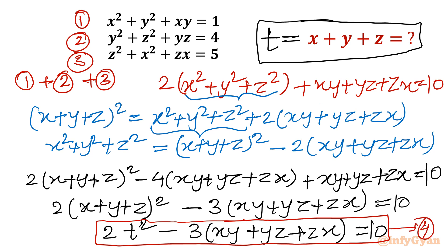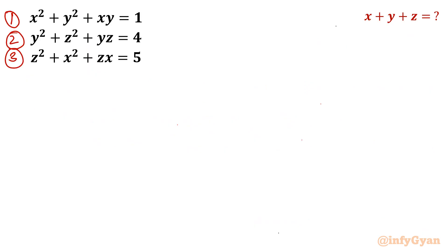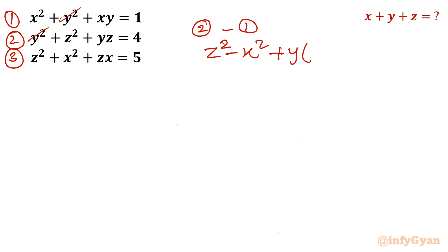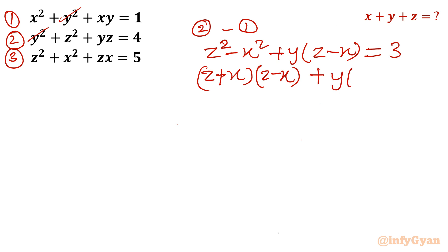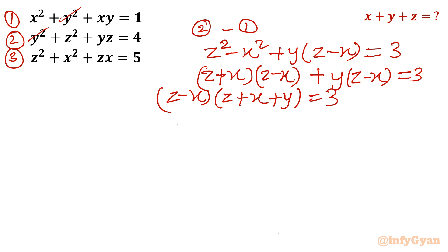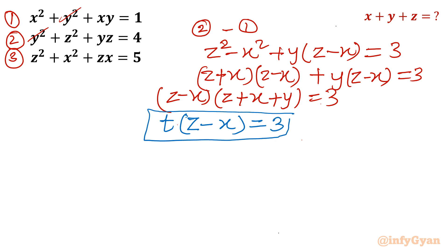Now I will consider equations 1, 2, and 3 again and perform operation 2 minus 1. The y squared terms cancel out. So we get z squared minus x squared plus y(z minus x) equals 3. Applying the a squared minus b squared formula: (z plus x)(z minus x) plus y(z minus x) equals 3. Taking (z minus x) as common: (z minus x)(z plus x plus y) equals 3. Since x plus y plus z equals t, this gives t(z minus x) equals 3. I will call this equation number 5.